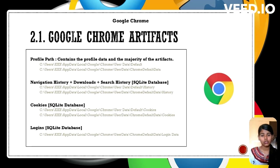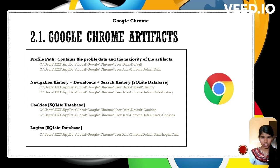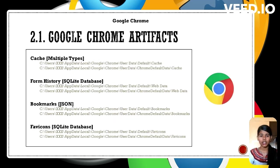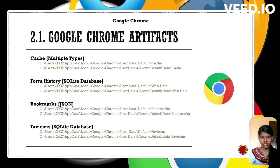Google Chrome stores user data and artifacts in the profile path with specific SQLite databases for navigation history, downloads, search history, cookies, and login information. These are located within the user data directory of the Chrome installation on a Windows system. Cache contains temporary web data for quick access. Form history stored in a database includes data entered in web forms. Bookmarks are saved in JSON format listing user-saved web pages. Favicons are stored in a database of website icons for easy identification. These artifacts are found within the user's local application data directory.